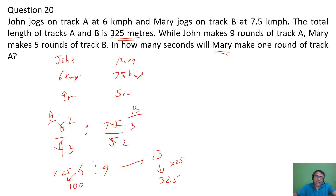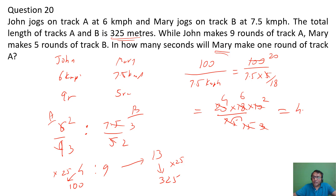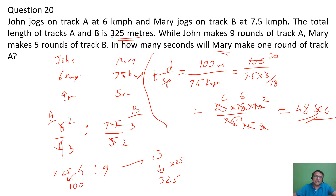Mary runs one round of track A, which is 100 meters, at 7.5 km/h. Converting to meters per second: 7.5 × 5/18 m/s. Time = distance/speed = 100 ÷ (7.5×5/18) = 100×18/(7.5×5) = 1800/37.5 = 48 seconds.